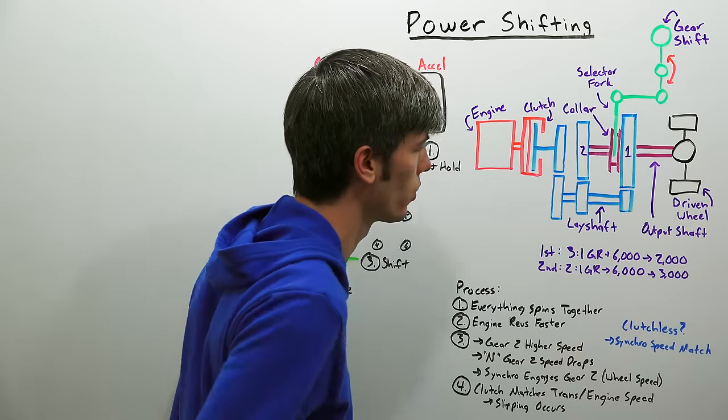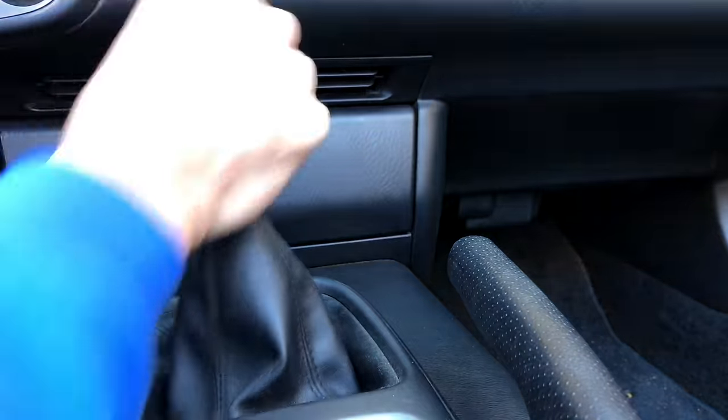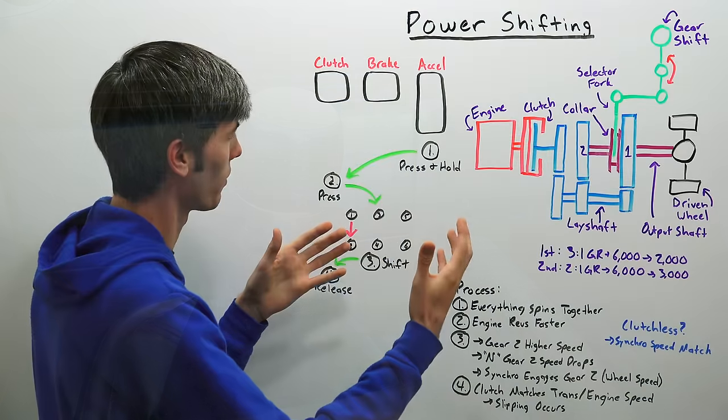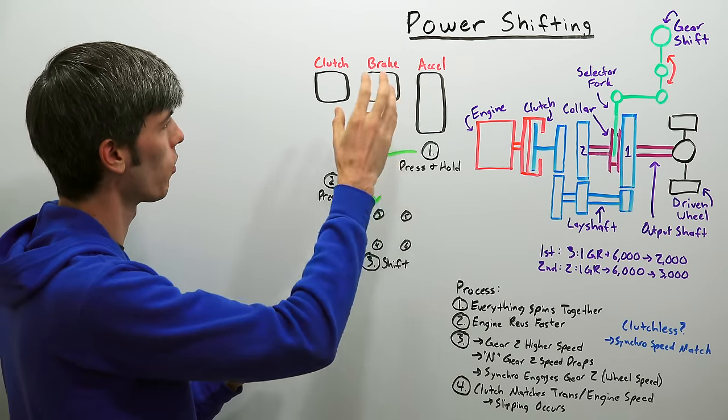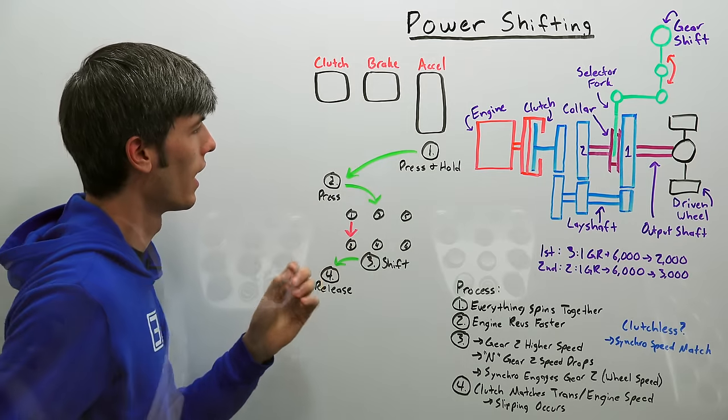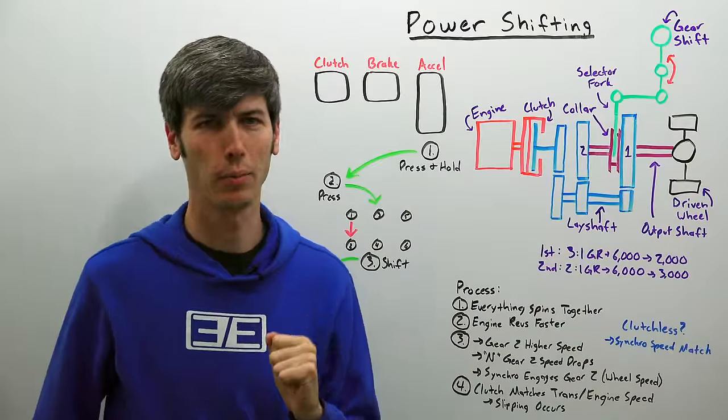And so we're going to walk through the process and talk about why this is a bad thing to do for your transmission and specifically the clutch and possibly the synchronizers. Starting with the breakdown here we have our accelerator pedal, the brake, the clutch. The very first thing you're going to do obviously is just press and hold the accelerator pedal so you're in first gear, you're driving along, you're flooring it.